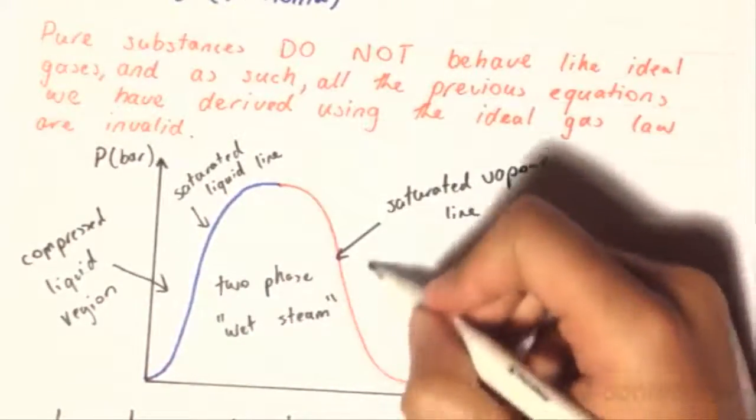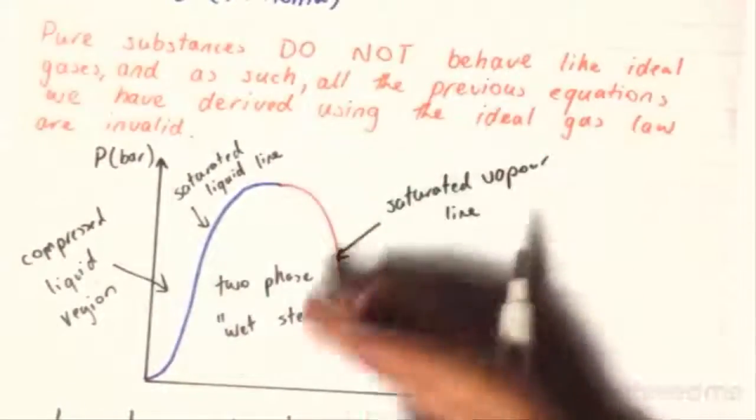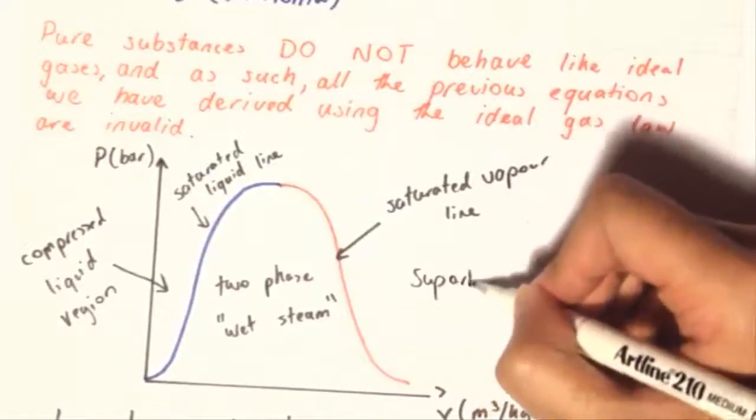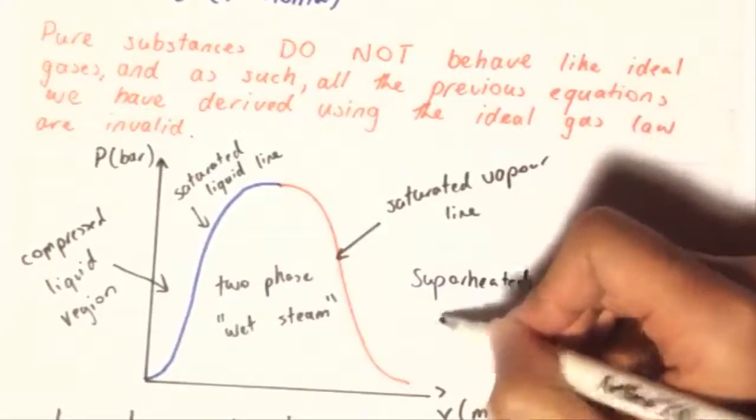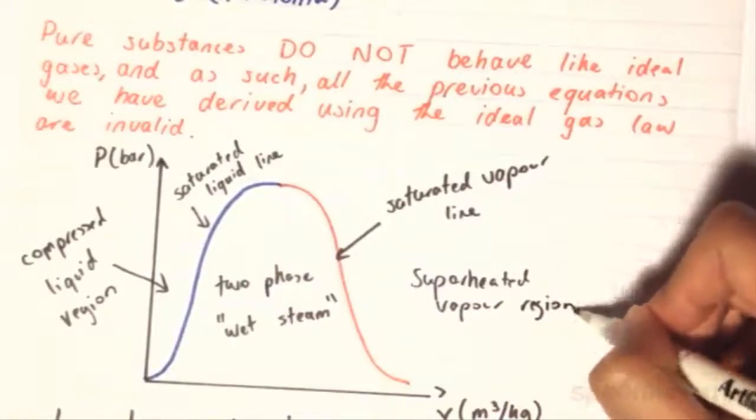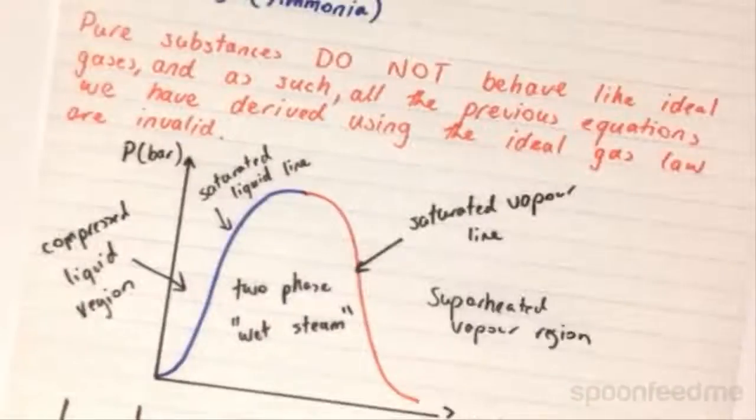this state over here outside to the right of the saturated vapor line is what we call superheated vapor region. And this is obviously 100% vapor.